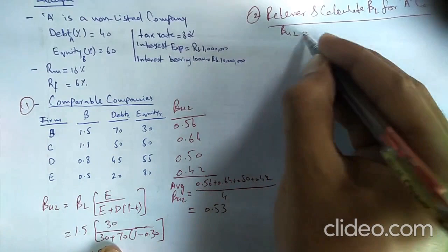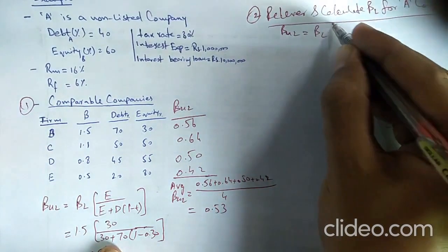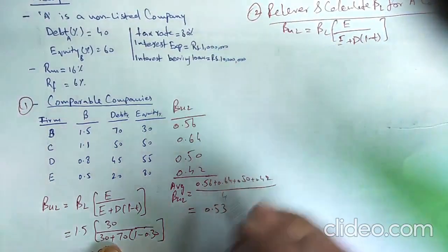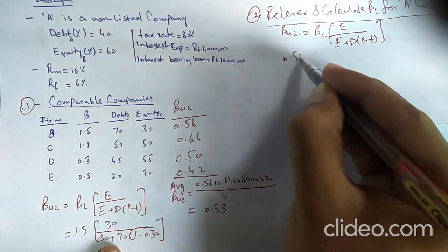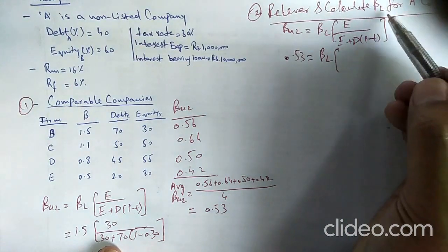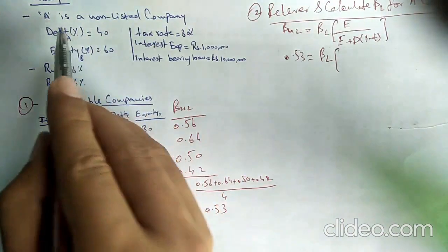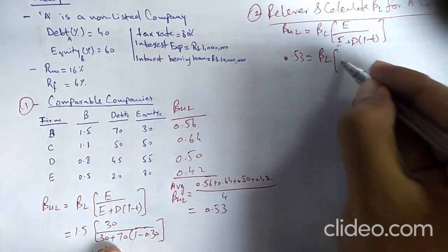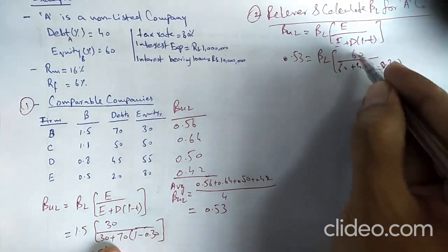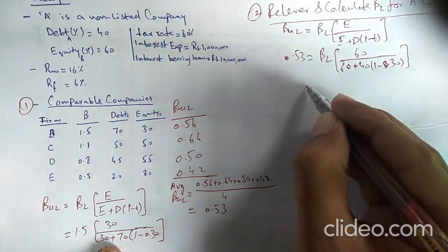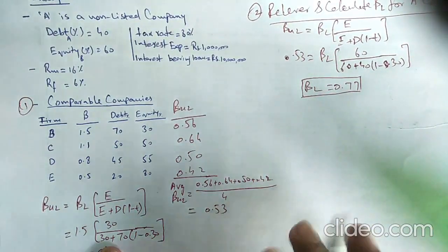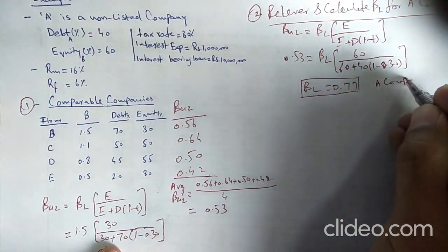To calculate the levered beta for A, we use the same formula: Beta_unlevered = Beta_levered × (Equity / (Equity + Debt × (1 − T))). We put the average unlevered beta of comparable companies, 0.53, here. The equity of A is 60%, debt is 40%, and tax rate is 0.30. Solving this gives Beta_levered for A company = 0.77.